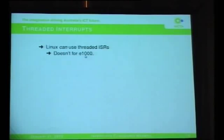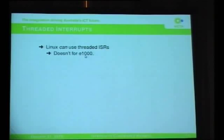Linux can use threaded interrupts now. The E1000 doesn't - it uses the traditional method and then defers almost all the work it does to a soft IRQ. It only re-enables the interrupt on the card after the soft IRQ has processed all the packets that are currently outstanding. To process the packets, it's got to add the SK buff header and push it up the TCP/IP stack and wake up anything in user space that's waiting for it.